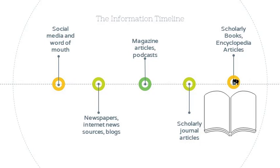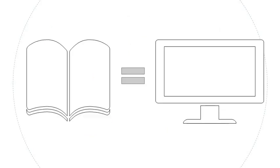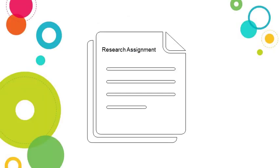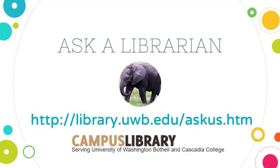Keep in mind that most of the types of sources we've discussed can be accessed in print or digital format. Remember that how you access the information is not as important as who created it and where it fits on the information timeline. The process that led to these sources' creation is important to consider as you search for, analyze, evaluate, and cite the sources relevant to your own research. If you have questions about this, just ask a librarian.